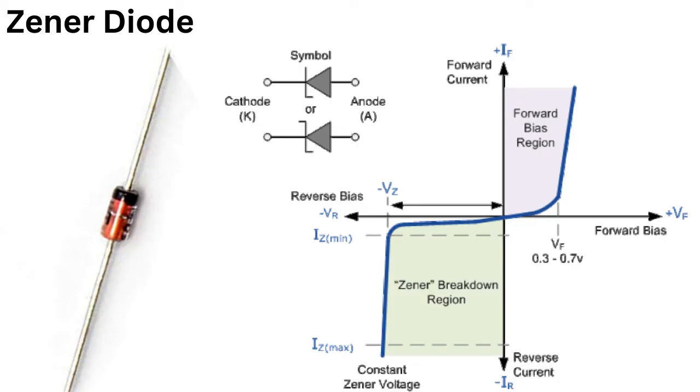Once this voltage is reached, the diode enters the Zener region, and the current flowing through it becomes relatively constant, regardless of the voltage applied across it. This is known as the Zener effect.